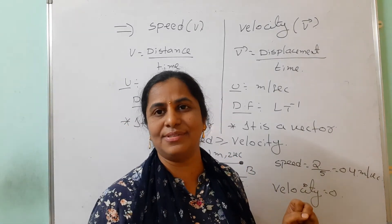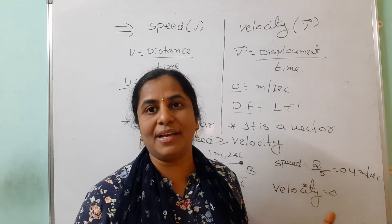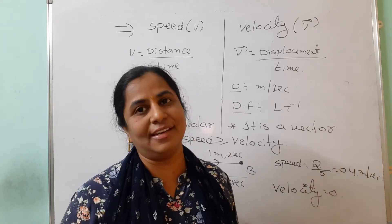Why does velocity equal zero? Because there is no gap between initial and final position. Zero displacement, so zero by something is velocity equals zero.